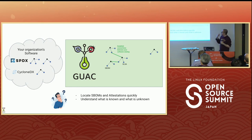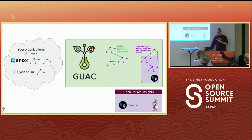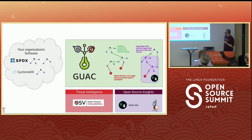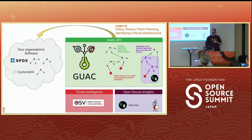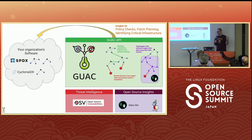This helps you understand where your SBOMs are, what attestations you have, and you begin to understand what is known — and just as importantly, what is unknown about your software supply chain. We begin to identify gaps and pull in additional information from open source data sources like OpenSSF Scorecard and Deps.dev, and pull in threat intelligence data from open source vulnerability databases like OSV.